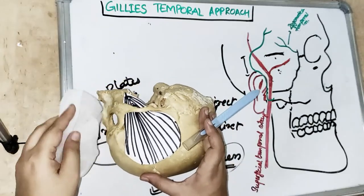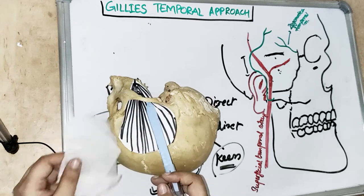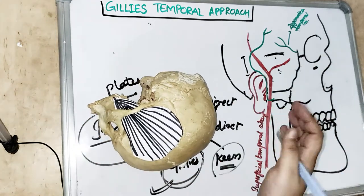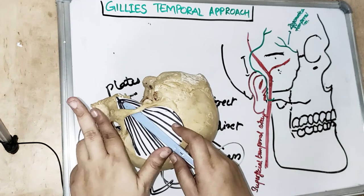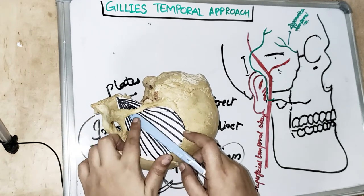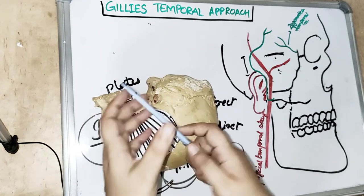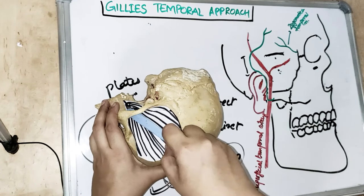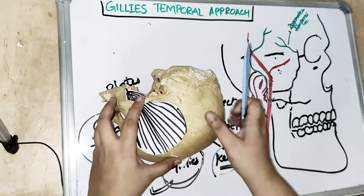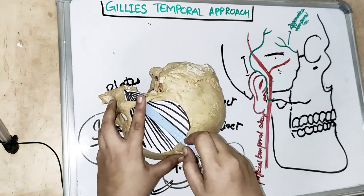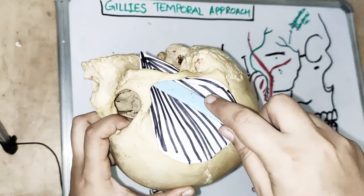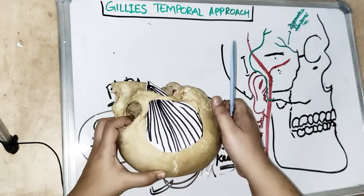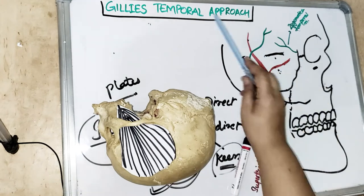Into this space between the temporal fascia and temporalis muscle, we insert either a Bristow elevator or, more commonly now, the Rowe zygomatic elevator. The Bristow elevator is older and had risks of temporal bone complications. The Rowe zygomatic elevator has two beaks: one for elevation and one for stabilization. We insert it and use an outward motion to elevate the depressed zygomatic arch back into its position, then palpate for step deformity to confirm correct placement.